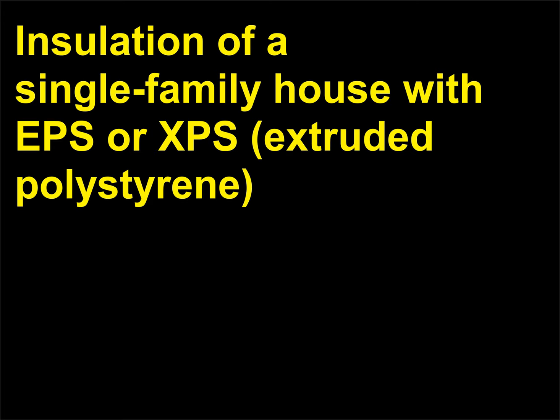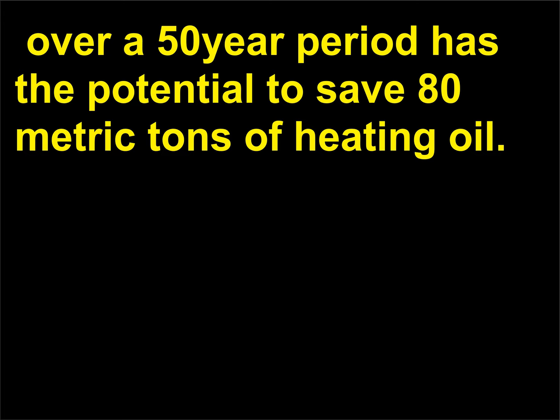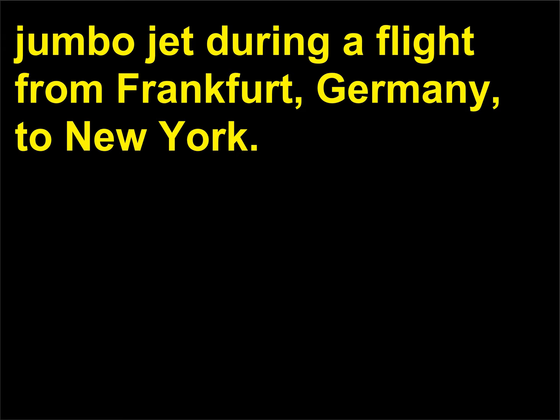Insulation of a single-family house with EPS or XPS, extruded polystyrene, over a 50-year period has the potential to save 80 metric tons of heating oil. This in turn corresponds to the fuel consumption of a fully loaded jumbo jet during a flight from Frankfurt, Germany, to New York.